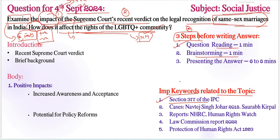Section 377 of the IPC is very important to add here. Key cases include Navtej Singh Johar (2018) and the Saurabh Kirpal case. For reports, the National Human Rights Commission report and Human Rights Watch reports are both very important, as they relate to particular human rights.